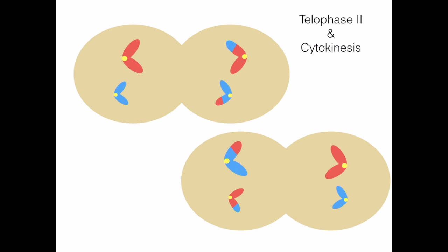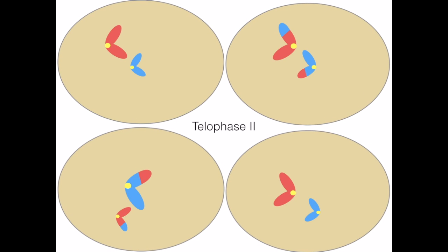Like telophase 1, each daughter cell's membrane forms cleavage until the cells split during cytokinesis, ultimately forming four sex cells.